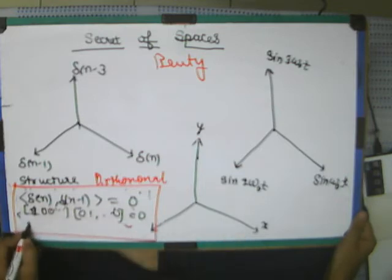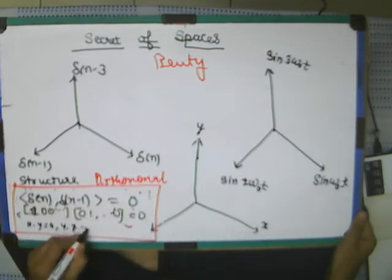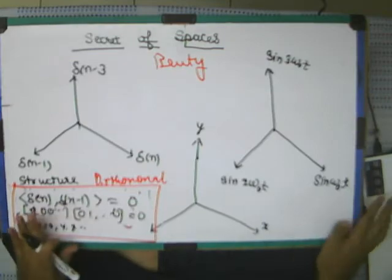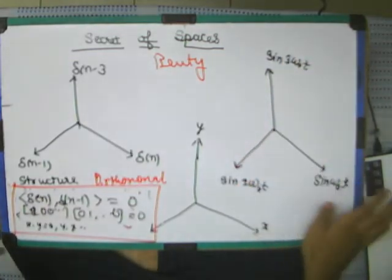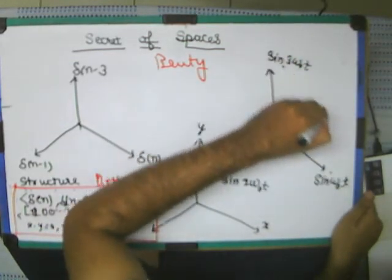Similarly, you just see, x dot y is 0, y dot z is equal to 0. And so, what can you see about this space also? This spaces are also orthogonal.